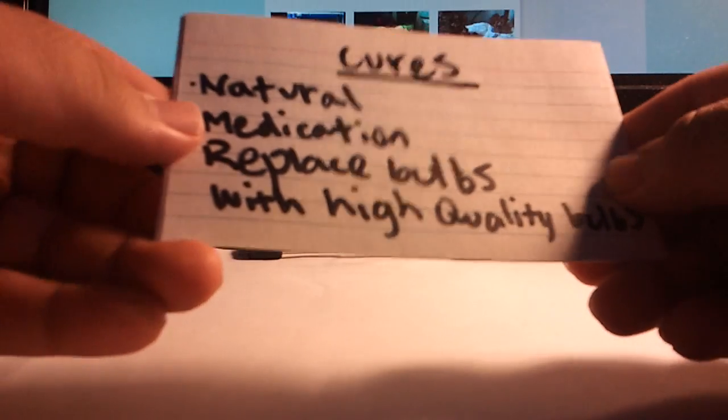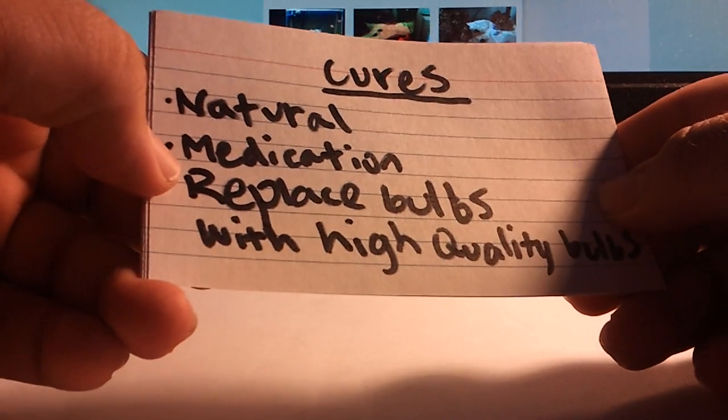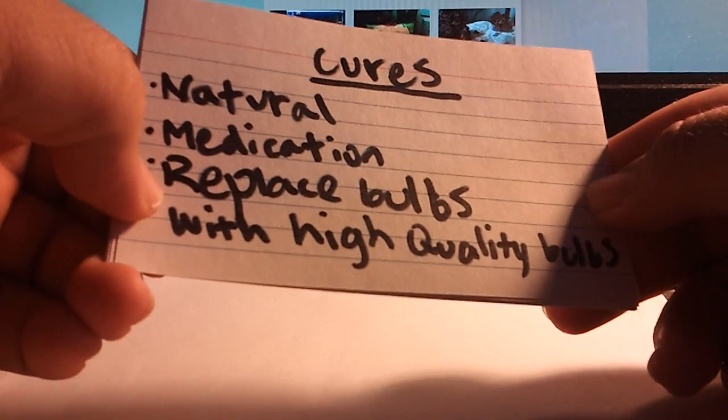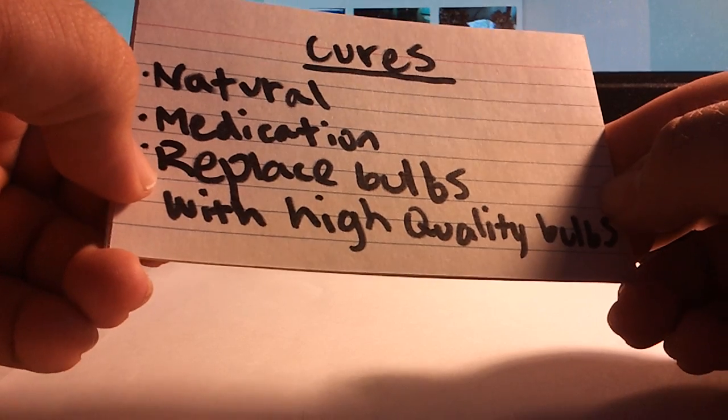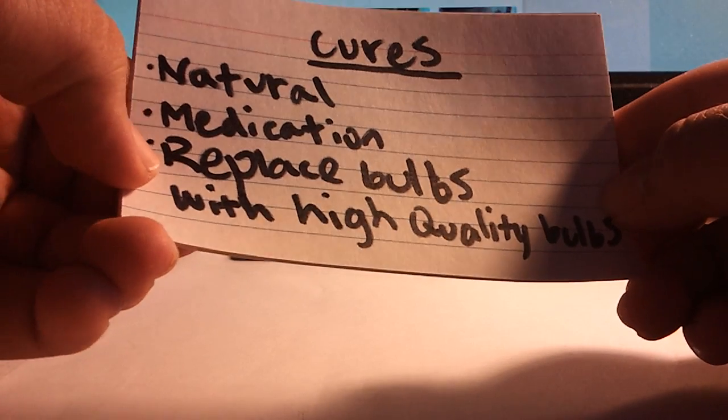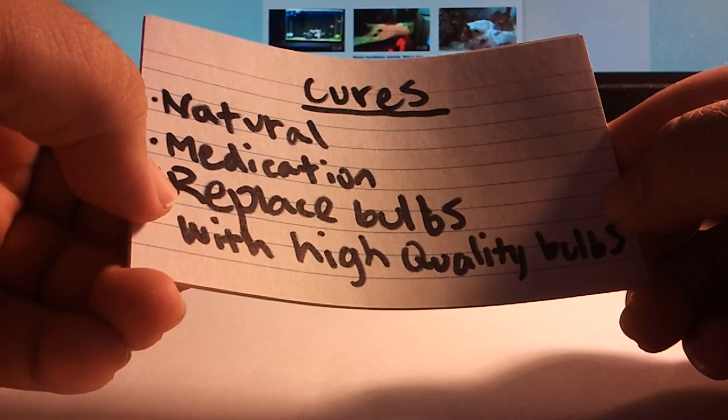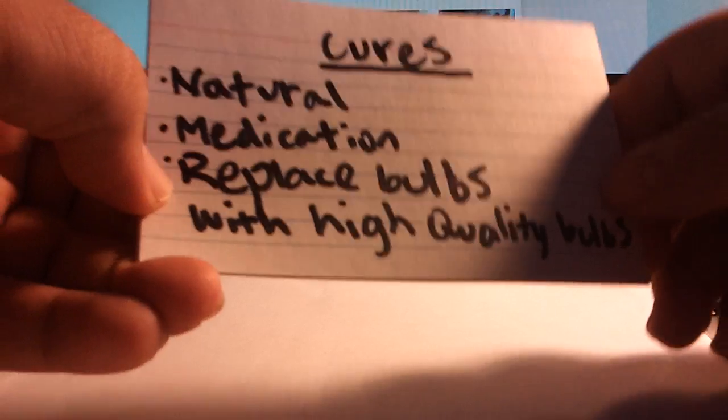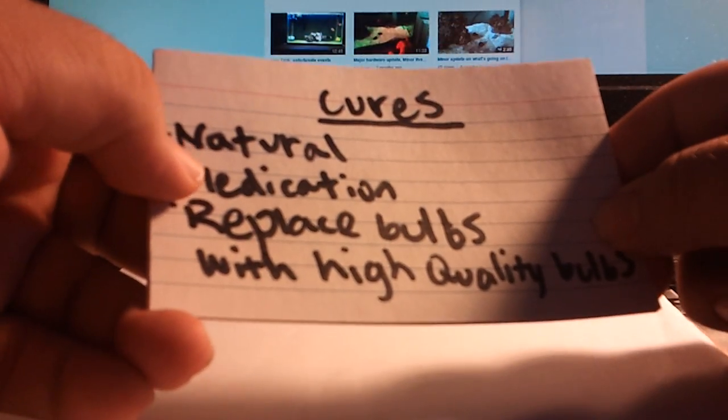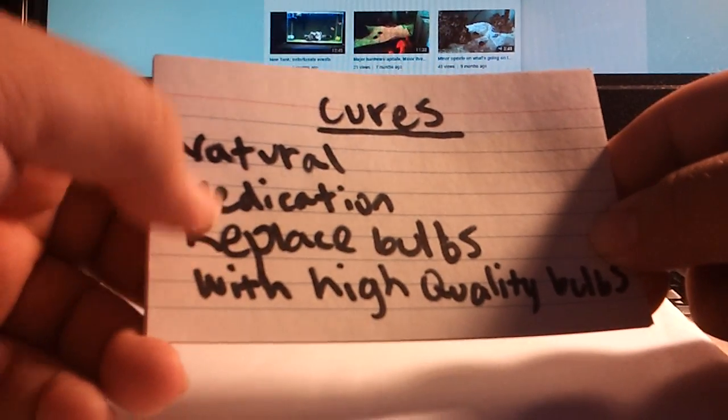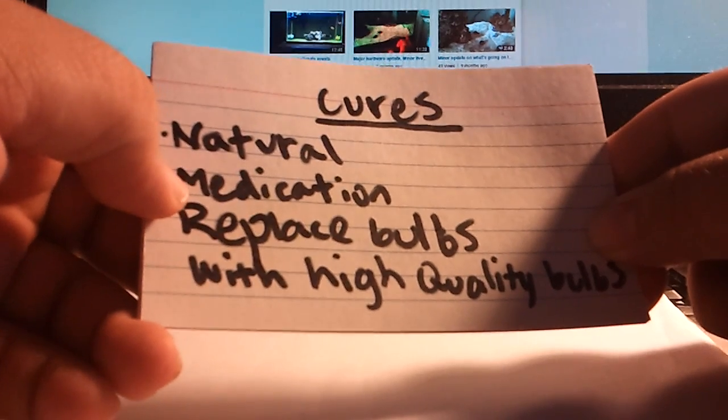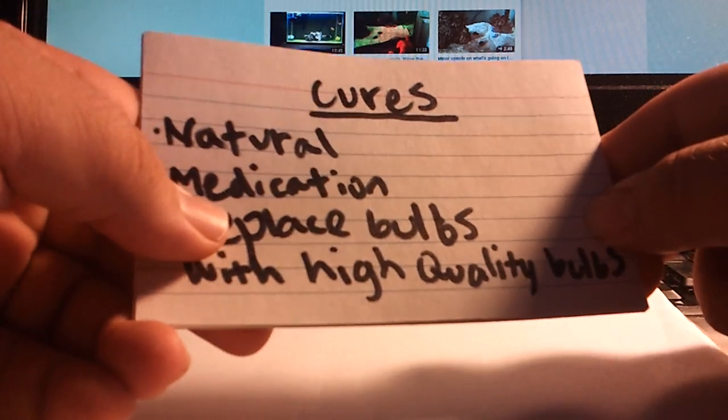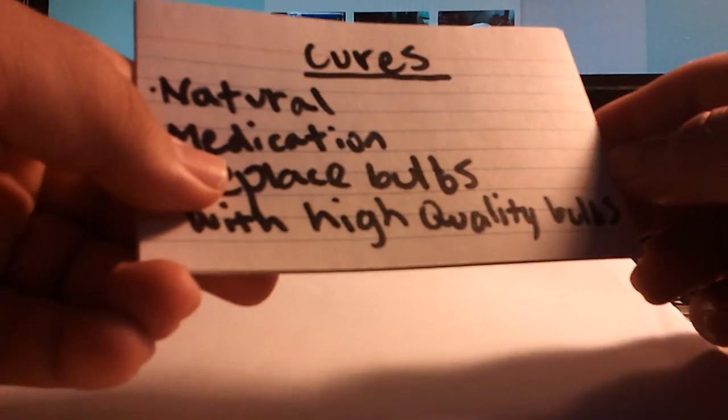Now let's get into the cures. There's several ways you could go. Of course if you have old bulbs, replace your bulbs. I would recommend high quality bulbs like ATI bulbs or Giesemann, I think. Other than the bulbs, there is a natural way to cure cyanobacteria and a medication way to cure your cyano. Each one has its pros and cons.